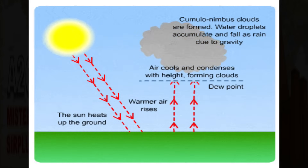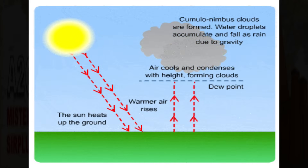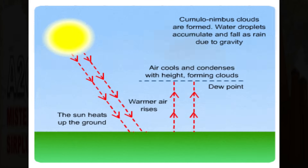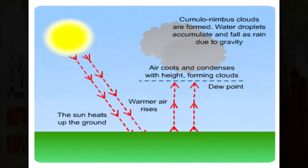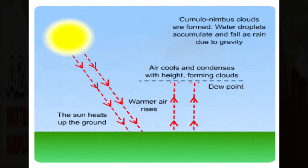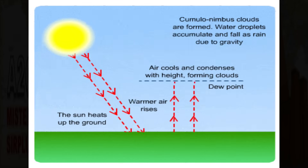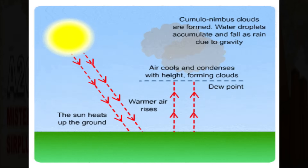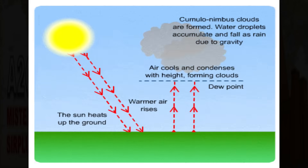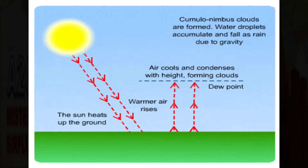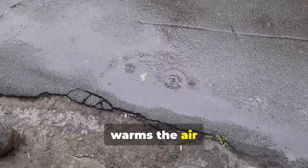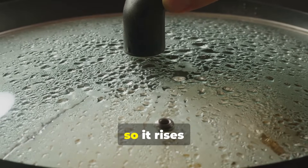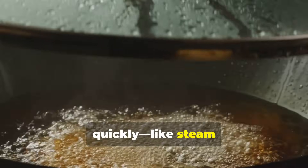Convectional rainfall is more prevalent in the summer months because of daytime heating. The summer is very hot, and that heat heats up the land, and the land heats the air. On a hot summer day, the sun beats down all morning. The ground heats up like a stove. That hot ground warms the air sitting right above it. Warm air is lighter, so it rises quickly, like steam from a pot.